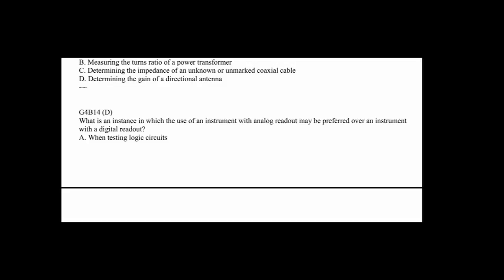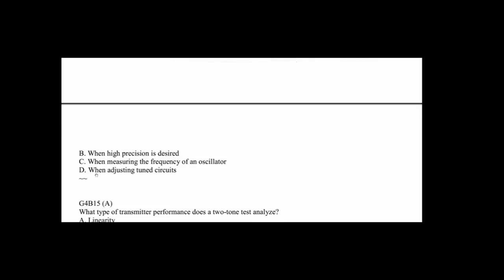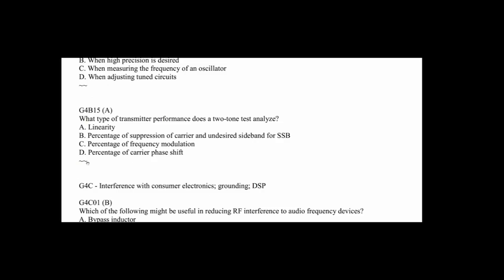G4B13: What is it used for an antenna analyzer other than measuring SWR of an antenna system? Well, there's lots. In this case, it's determining the impedance of an unmarked cable. You can't measure front-to-back, you can't measure turns ratio, and you can't measure the gain of an antenna, but you can sure measure a coax cable and losses and other things. G4B14: What is an instance in which the use of an instrument with an analog readout may be preferred over an instrument with a digital readout? When adjusting something like tuning up an amplifier, and that's the answer, when adjusting tuned circuits. G4B15: What type of transmitter performance does a two-tone test analyze? It's the two tones produce a pattern, and with that pattern you can see that the two tones look the same. There are other patterns you can put up in terms of the linearity, whether or not the amplifier is amplifying without distorting the signal.